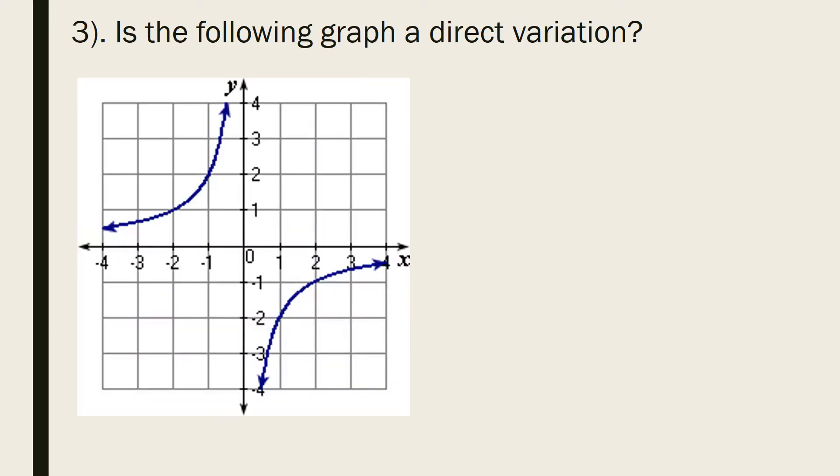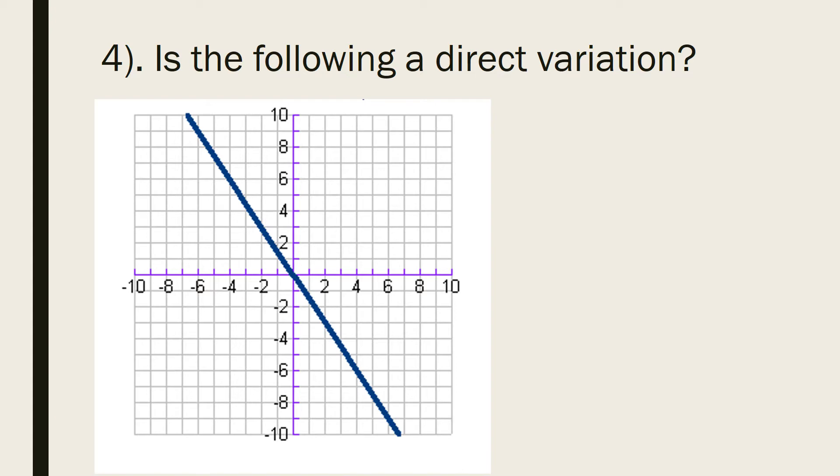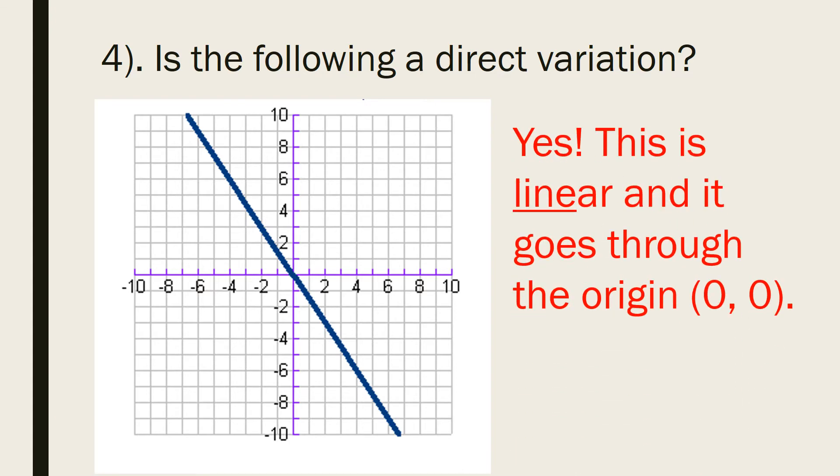Is the following graph a direct variation? No, this is not linear. Is the following a direct variation? Yes, this is linear and it goes through the origin 0,0.